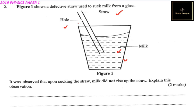If the straw is perfect and does not have a defect, then the milk would rise up because you create a vacuum inside the straw. Due to atmospheric pressure, the milk will rise.